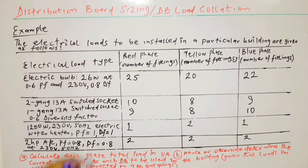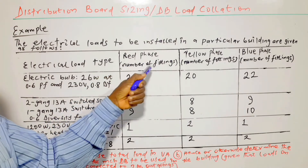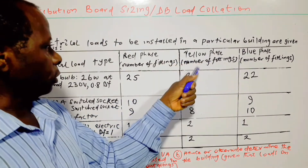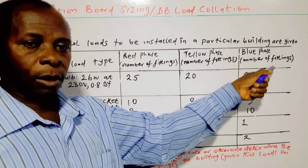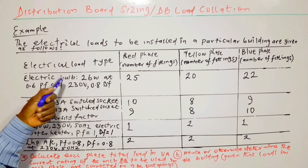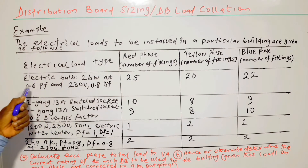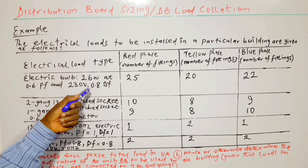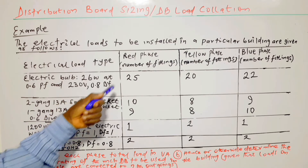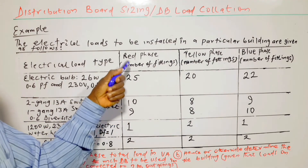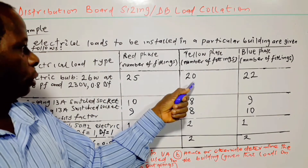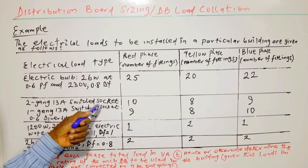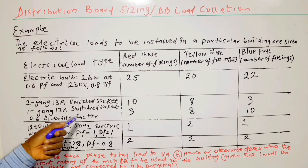The electrical load types are listed with the number of fittings or appliances on each phase — red, yellow, and blue. For electrical bulbs rated at 26 watts, 0.6 power factor, 230 volts, and 0.8 diversity factor: we have 25 on the red phase, 20 on the yellow phase, and 22 on the blue phase.